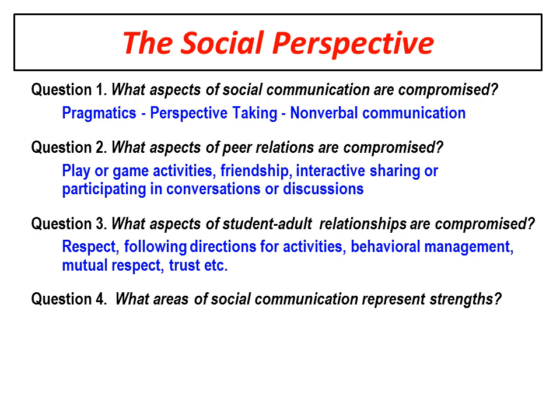The social perspective is obviously very important. What aspects of social communication are compromised? We all know that involves pragmatics, perspective taking, and non-verbal communication. What aspects of peer relations are compromised — play or game activities, friendships, peer interactions, interactive sharing, or participating in conversations or discussions? And what aspects of student and adult relationships are compromised? Respect, following directions, behavioral management, mutual respect, trust. And what areas of social communication actually represent strengths?